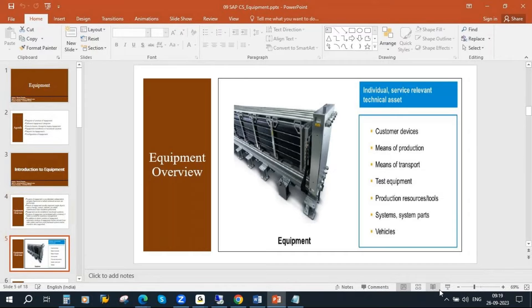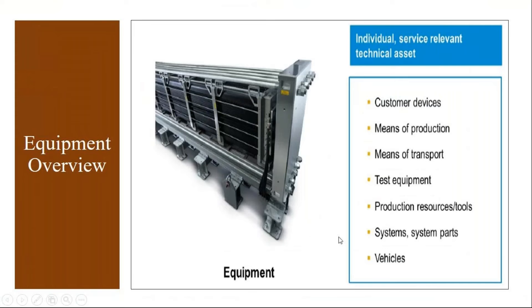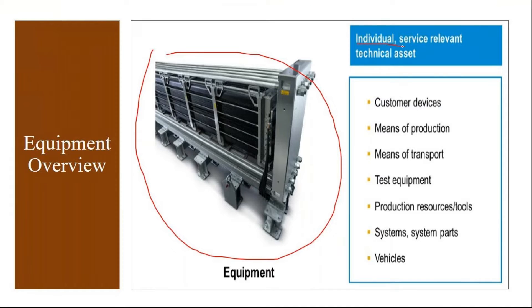So equipment is nothing but an individual service-relevant technical asset where you do some service activity. It can be a customer device - for us it is the product we are selling to the customer, which is customer equipment. In the plant maintenance module, it can also be a production machine or a means of transport.